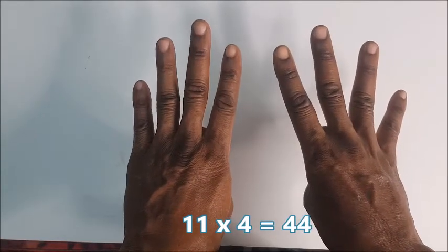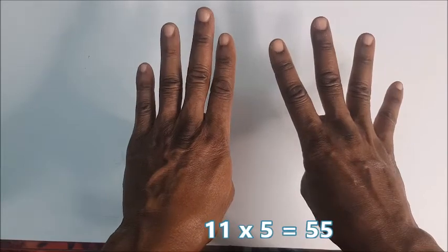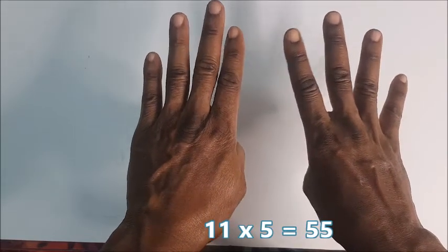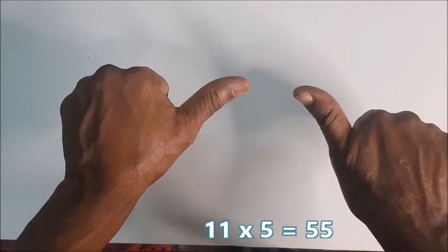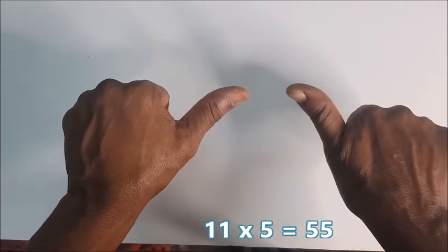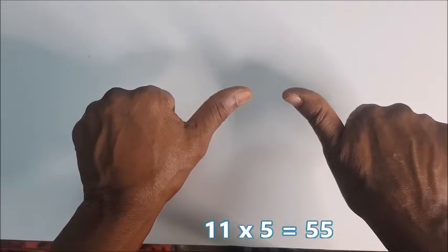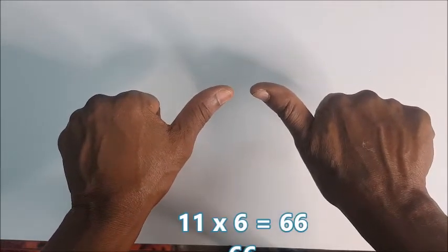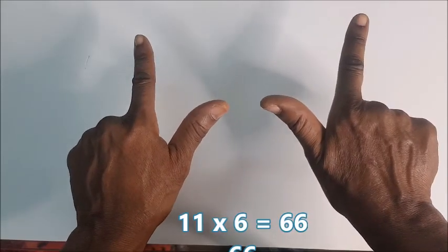Now 11 times 5, you hold your fist and you shoot up both thumbs, that is 55. 11 times 5 is 55. 11 times 6, you add here, you add here, 11 times 6 is 66.